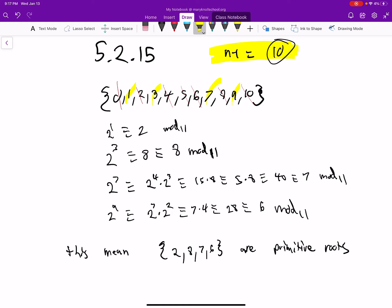And then you take those to that power. So 2 to the 1, 2 to the 3, 2 to the 7, 2 to the 9, mod 11.